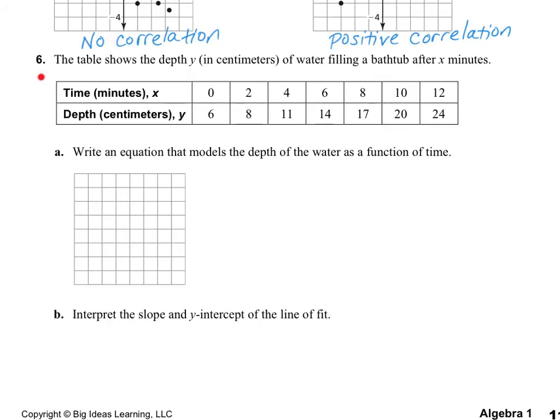In number 6, we are given a table. And this table has the depth in centimeters of water that's filling a bathtub after X minutes. So here's our X minutes, 0 minutes all the way up to 12 minutes, and then this is how deep the water is here. So what they want us to do is write an equation that models the depth, and they want us to interpret the information. So the slope, the Y intercept, we're also going to interpret the R value, even though they didn't ask us to do that in this problem.